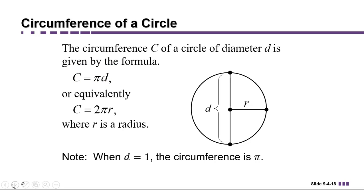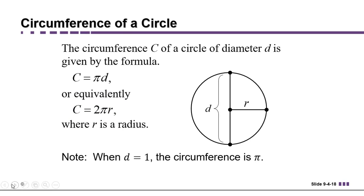Now remember diameter is twice the length of the radius. So you could also write circumference equals 2 times pi times R. Twice the radius times pi is the same as pi times diameter.